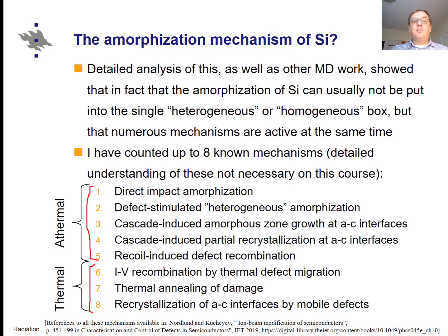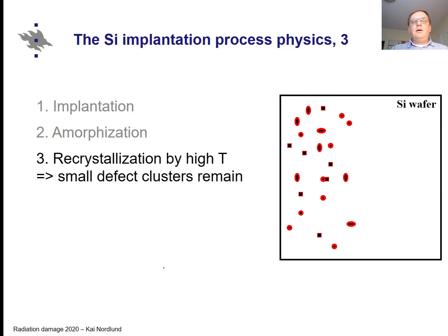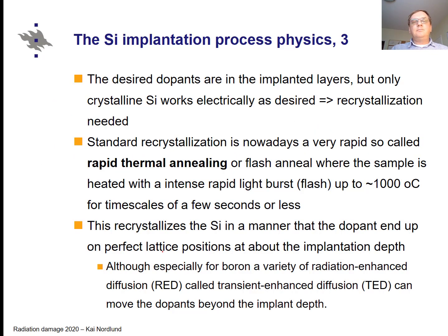After the silicon is amorphized, to make a working semiconductor circuit you don't want amorphous silicon — you want crystalline silicon. So after implantation the dopants have been introduced but the structure is a mess. The material must be recrystallized, which is done by high-temperature annealing. Typically this is around 700°C, or flash lamp annealing at 1000–1100°C. After recrystallization you get small defect clusters.